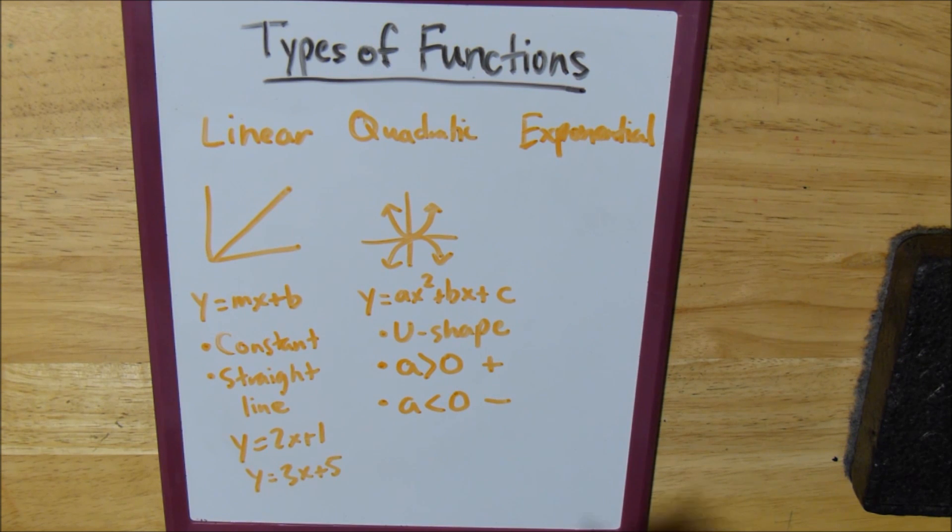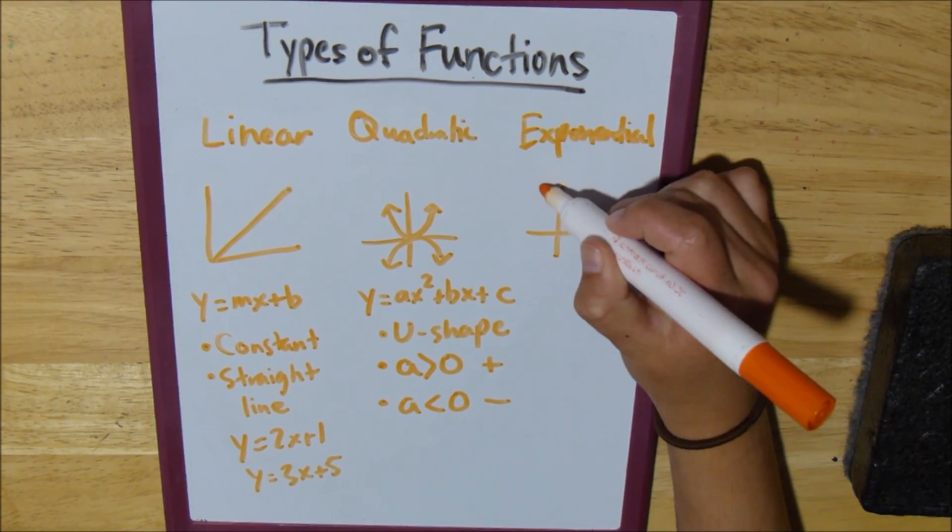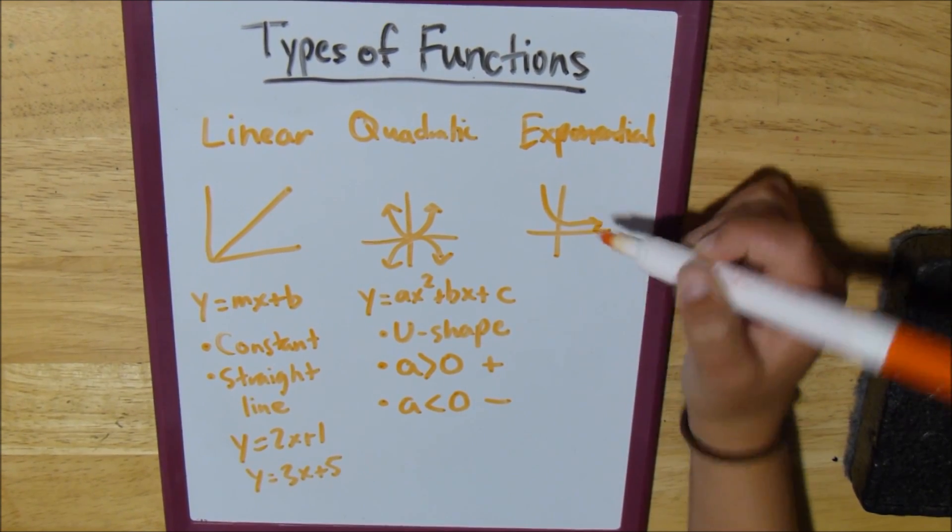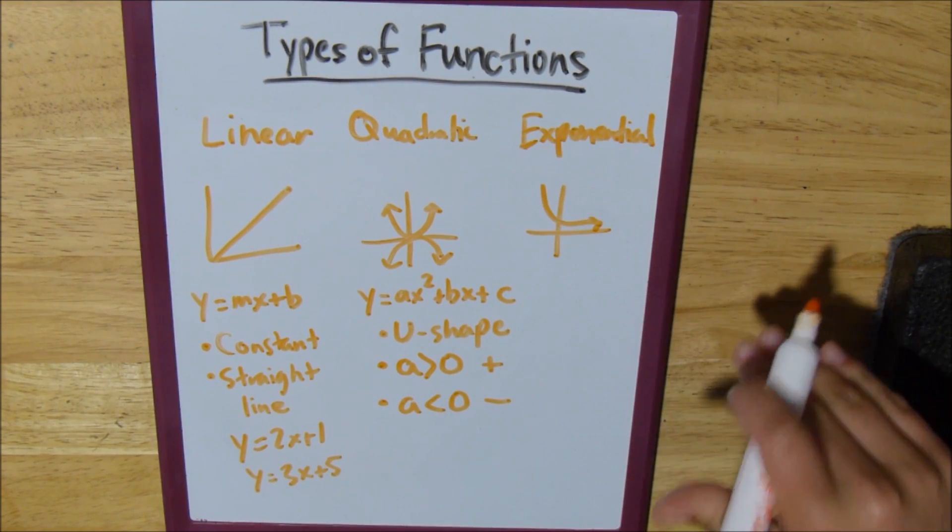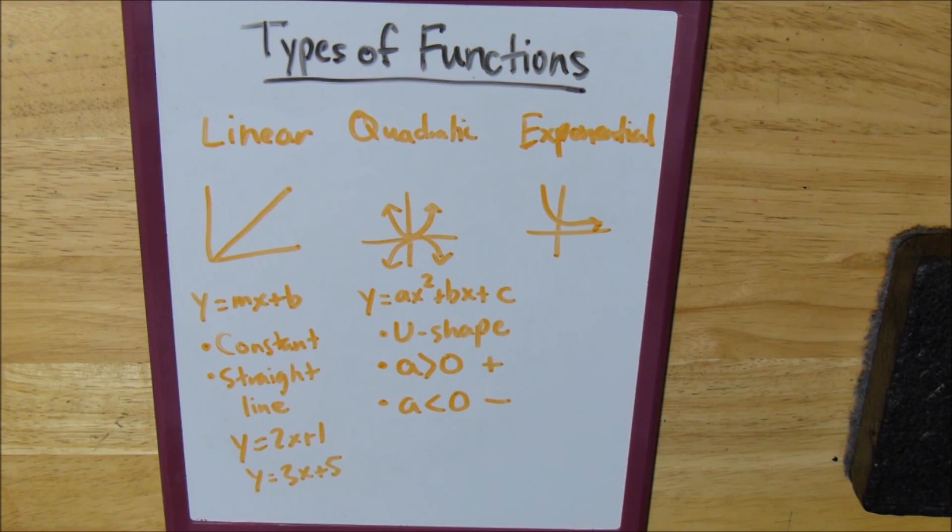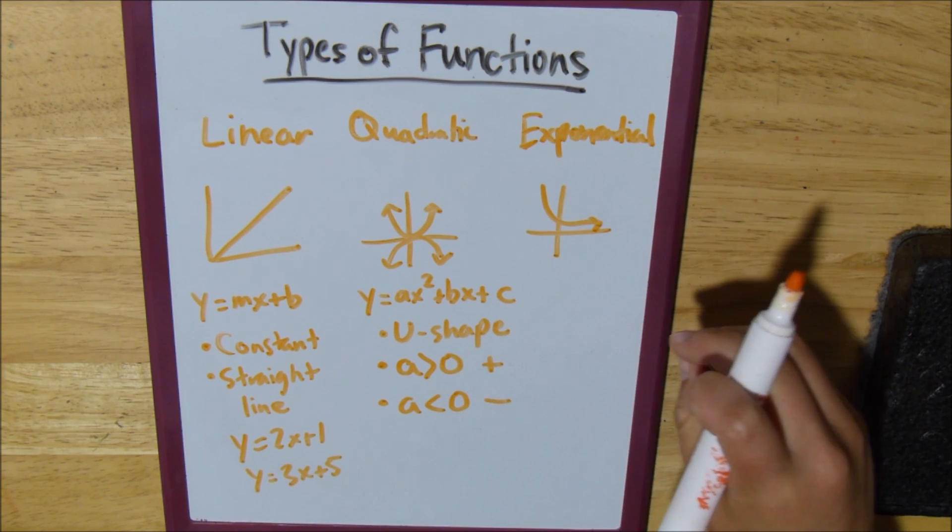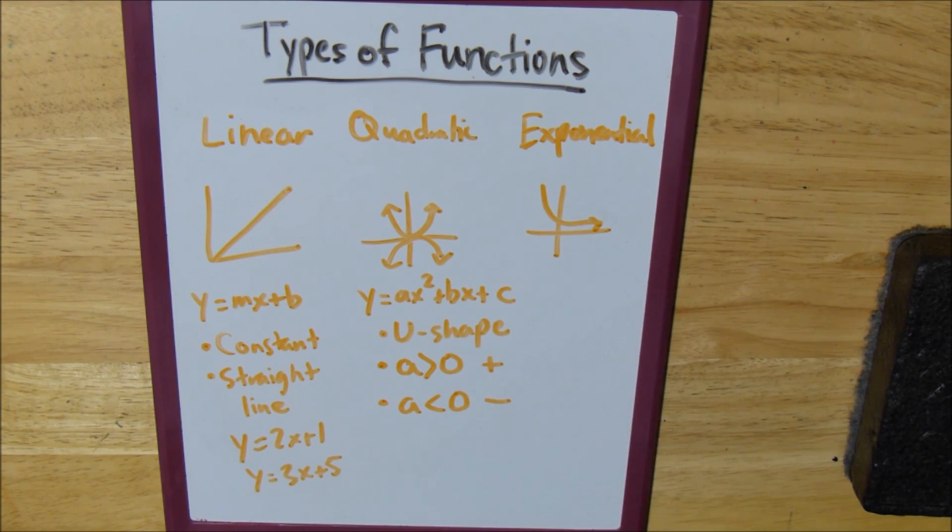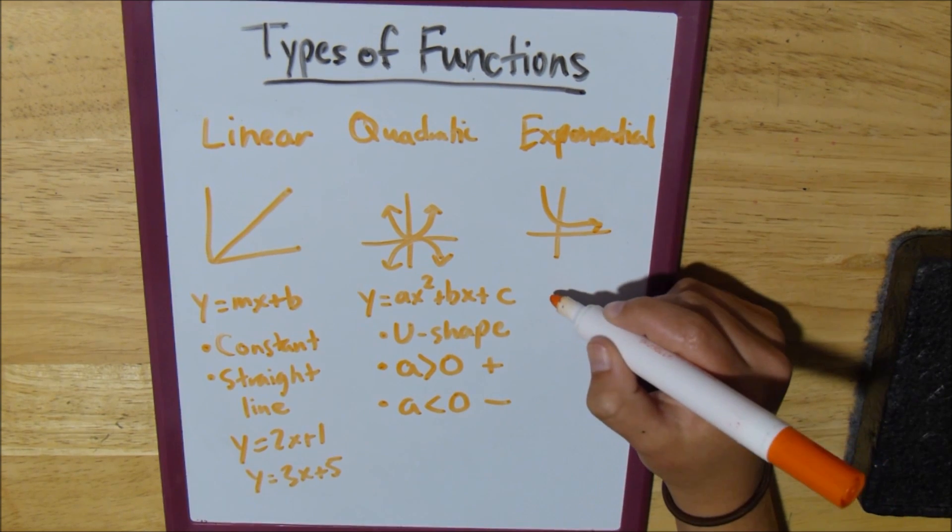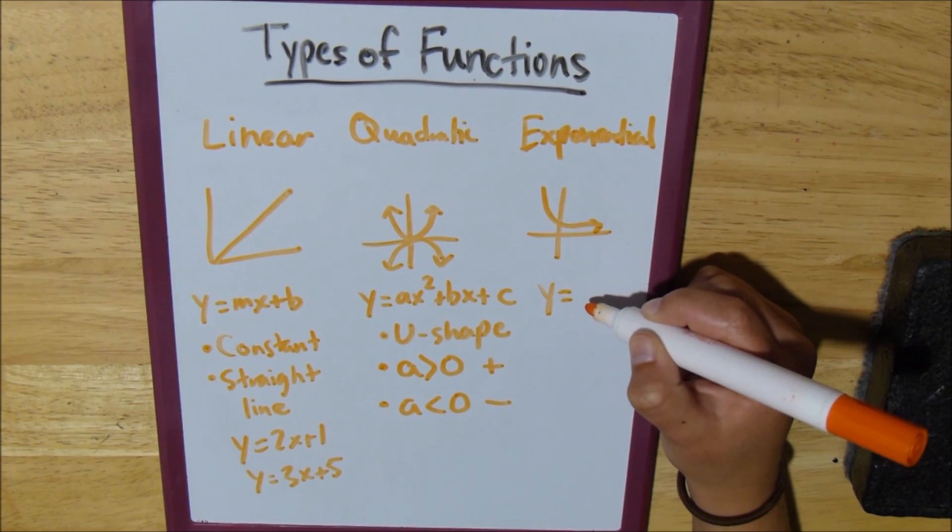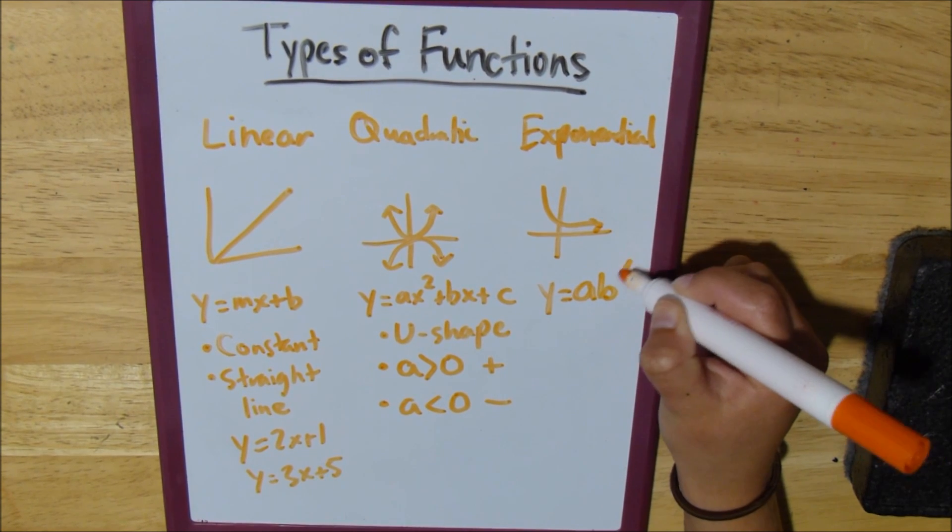So exponential functions could be like this. You're typically looking for a curved shape that slows down to a smaller slope, a less steep slope. And the function for that is y equals a times b to the x.